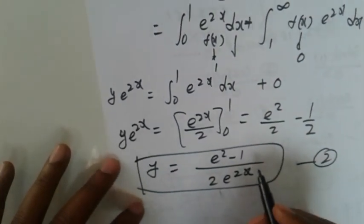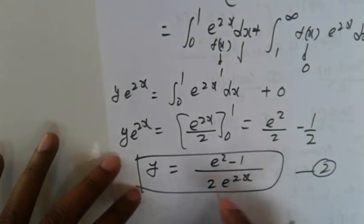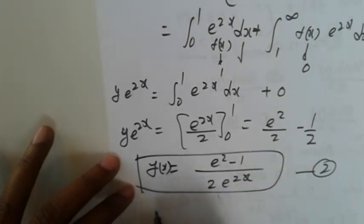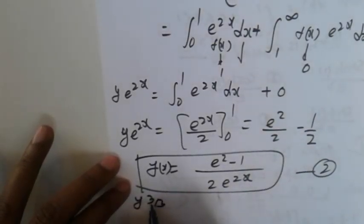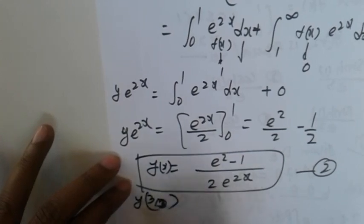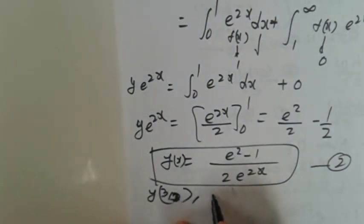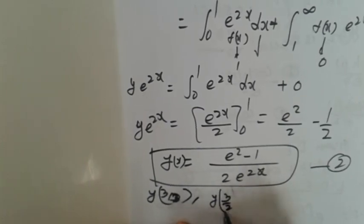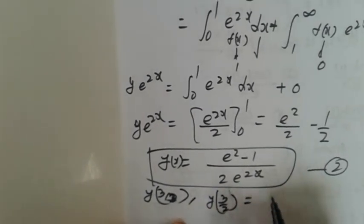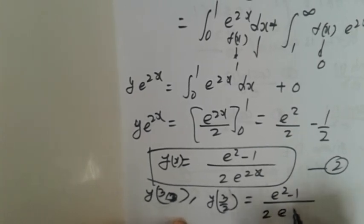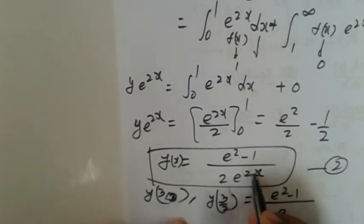This is equation number 2. Now find Y(3/2). Y(3/2) is found by substituting x = 3/2: Y(3/2) = (e^2 - 1)/(2e^(3/2)), which equals (e^2 - 1)/(2e^(3)).